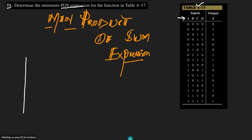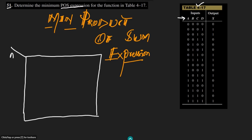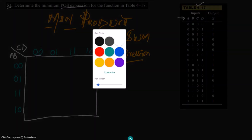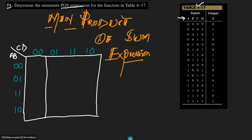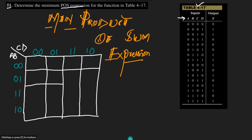The Karnaugh map for the four variables — let me draw it here. This will be the Karnaugh map and here I will have A, B on one axis and C, D on the other, writing all the bit combinations: 00, 01, 11, 10 for AB and 00, 01, 11, 10 for CD. Now drawing all the cells — this is the Karnaugh map.